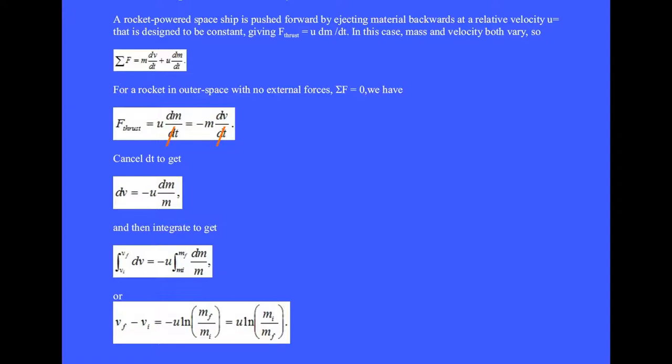Cancel dt to get dv equals minus u dm over m and then integrate the velocity from an initial to a final velocity and we integrate from an initial to a final mass. We get v final minus v initial equals u ln of mi over m sub f.